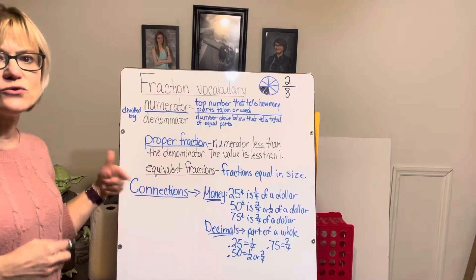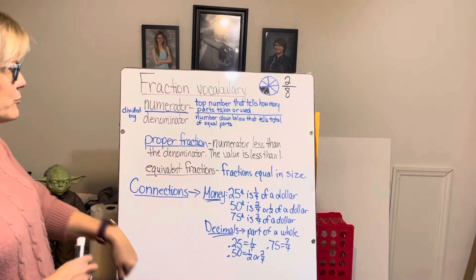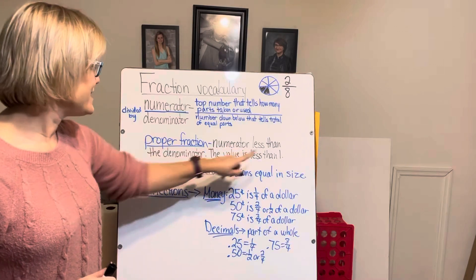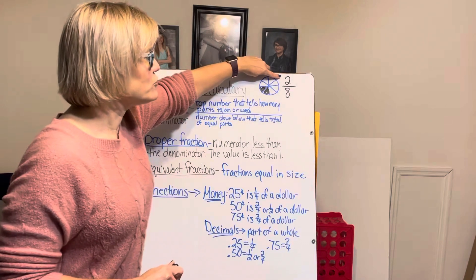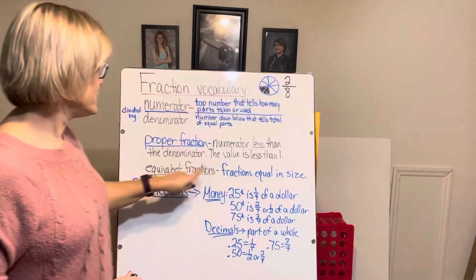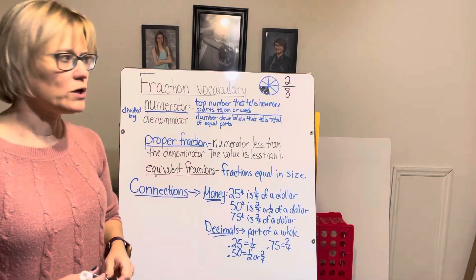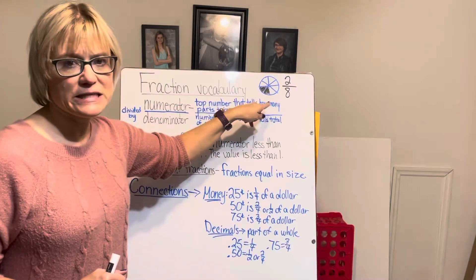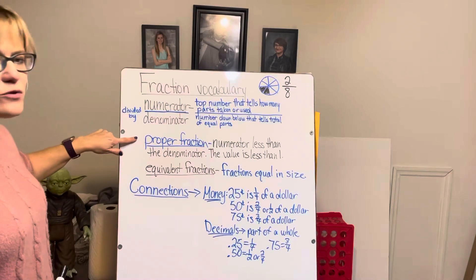Now that we know what a numerator and denominator are, let's move on to our next vocabulary word: proper fractions. Proper fractions are when the numerator is less than the denominator. That means the value is less than one — less than the whole pie. The whole pie has not been eaten; only two-eighths of the pie has been eaten. That's what makes it a proper fraction.